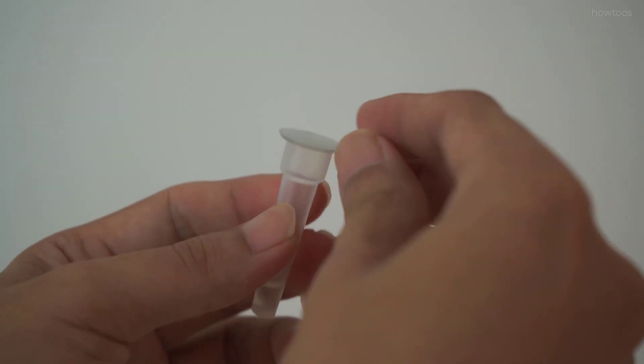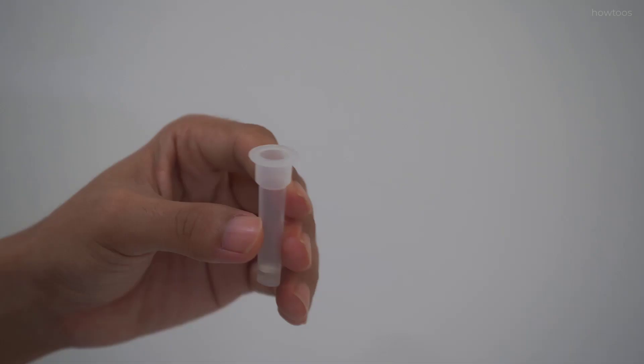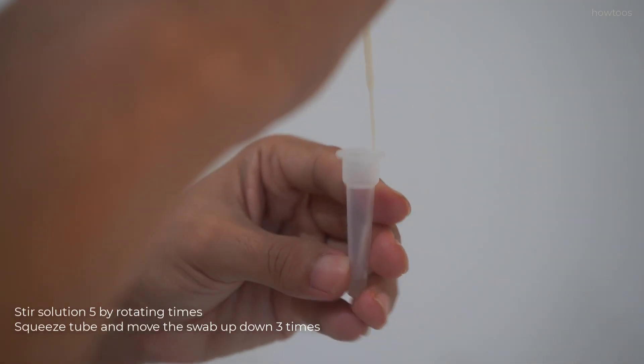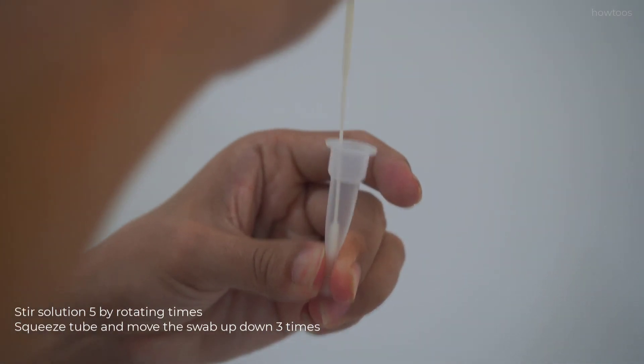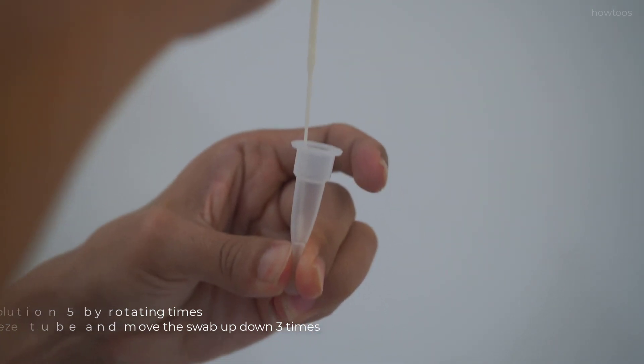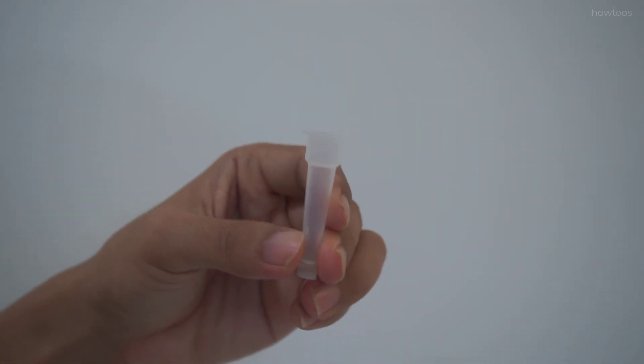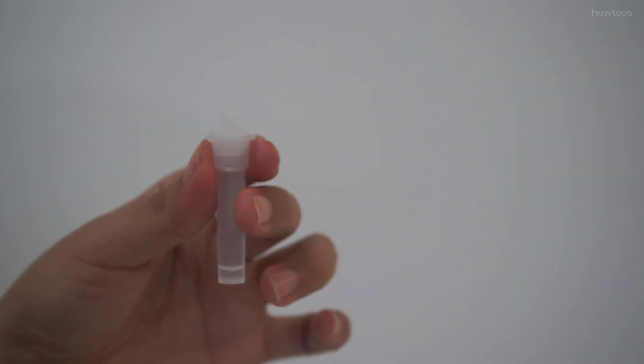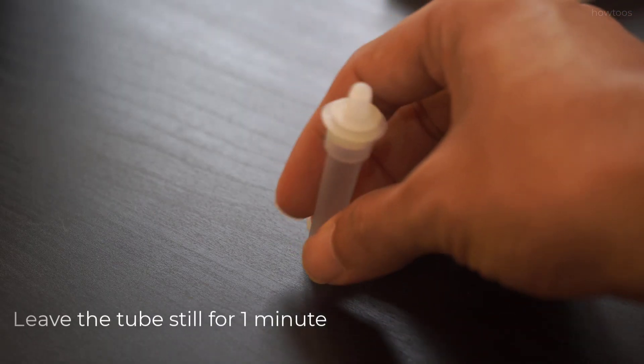Peel off the foil from sample extraction tube. Place the swab into the tube. Use the swab to stir in the solution at least five times. Move up and down for at least three times to expel any sample solution from the swab. Insert the tube cap firmly on the sample extraction tube. Put the tube still for one minute to release viral antigens.